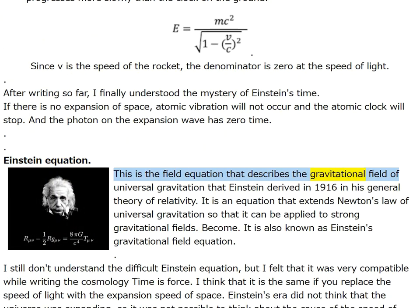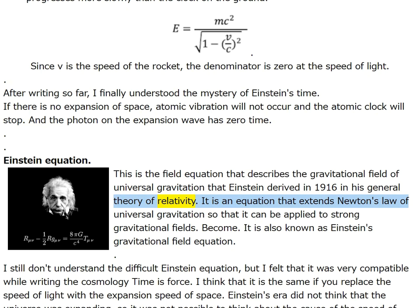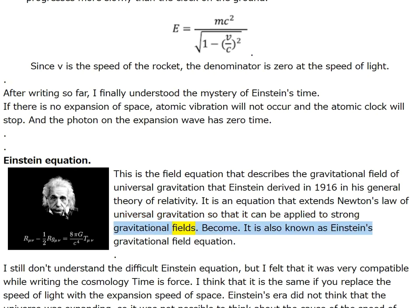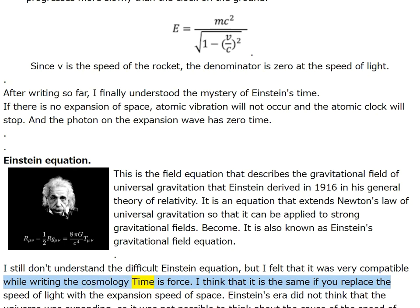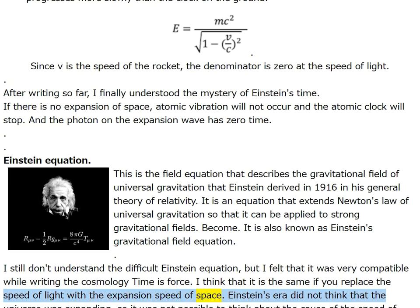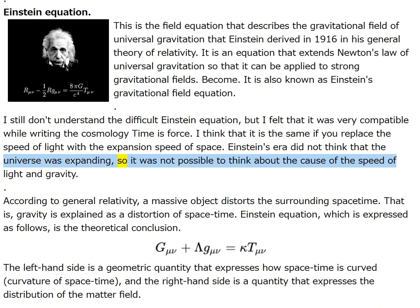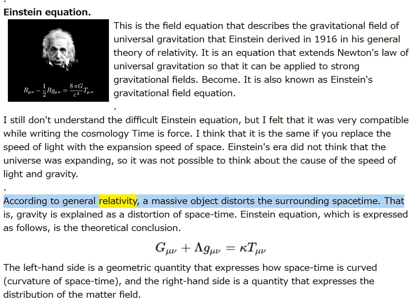Einstein's field equation describes the gravitational field that Einstein derived in 1916 in his general theory of relativity, extending Newton's law of universal gravitation to strong gravitational fields. I feel it is very compatible with the cosmology Time is Force — the same if you replace the speed of light with the expansion speed of space. Einstein's era did not think the universe was expanding, so it was not possible to think about the cause of the speed of light and gravity.